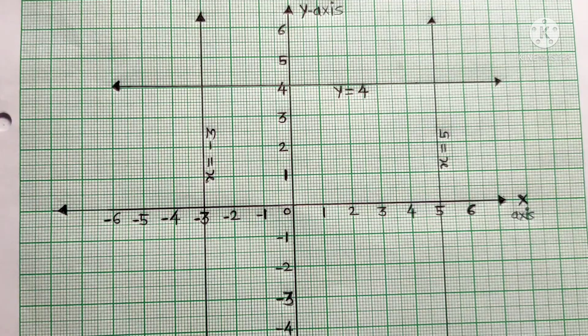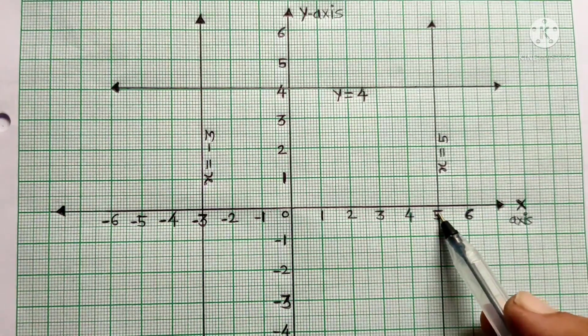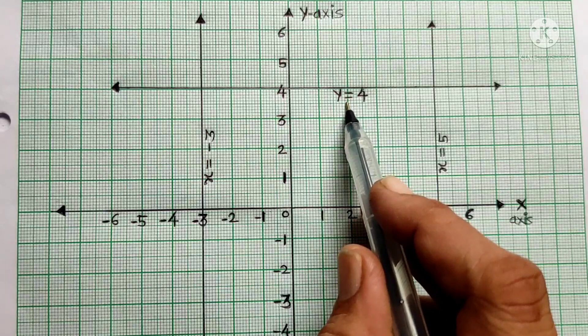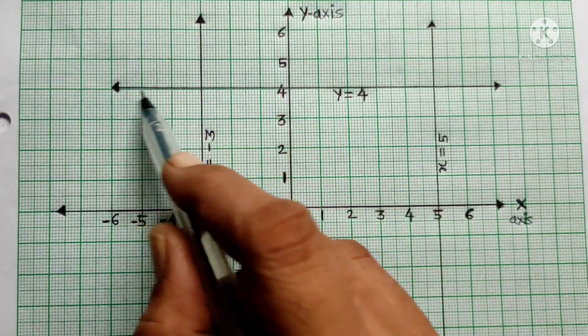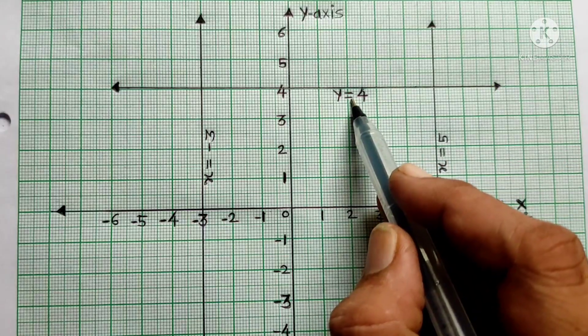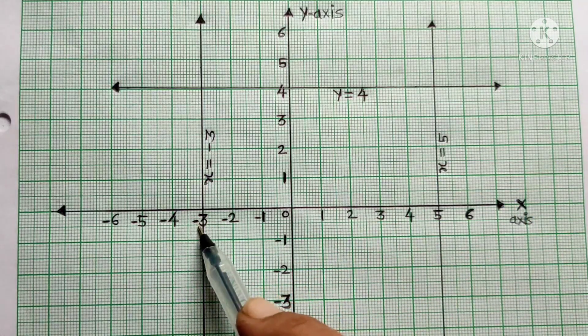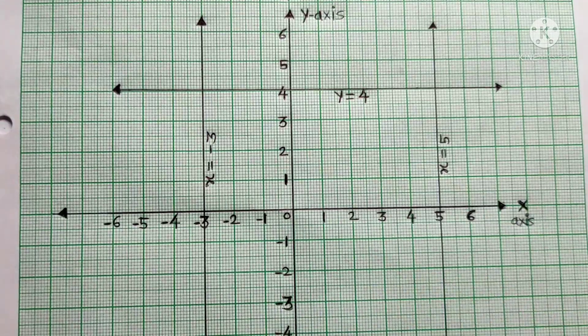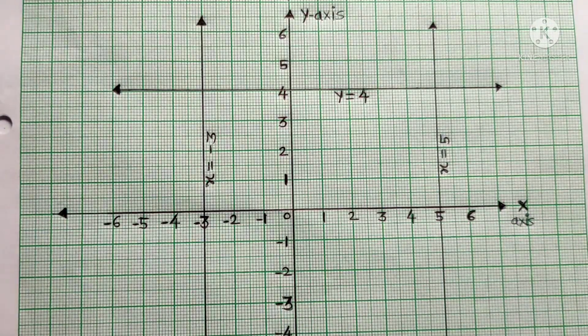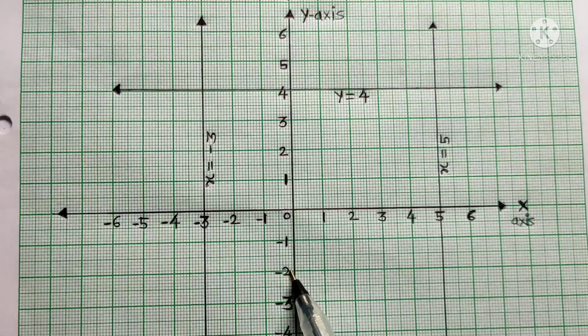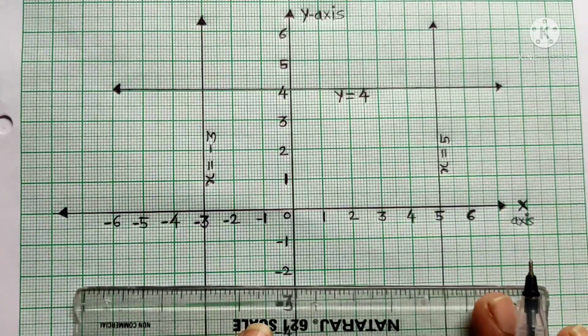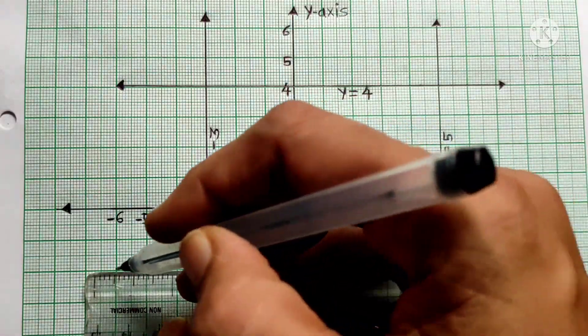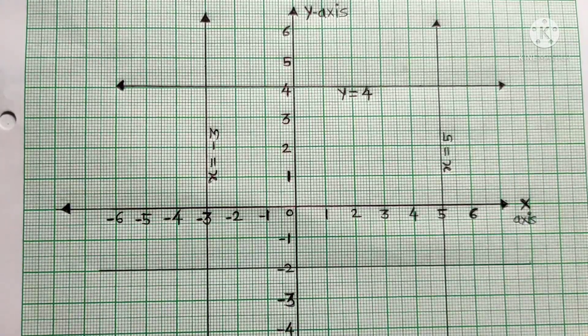On the graph paper, x is equal to 5, we draw a vertical line. Then y equals 4, we draw a horizontal line. x equals minus 3, and finally y is equal to minus 2. On the y-axis, we find minus 2 and draw a line through it at y equals minus 2.